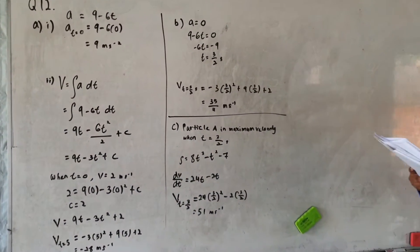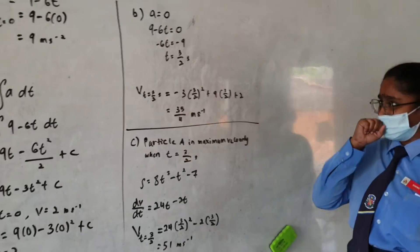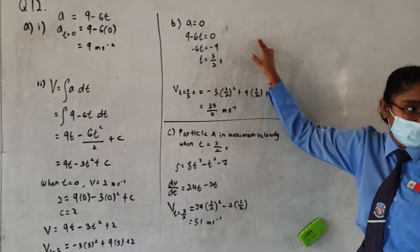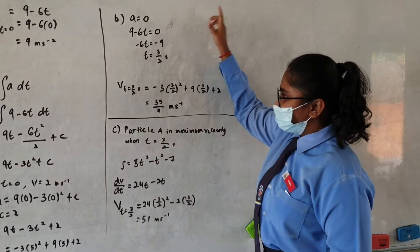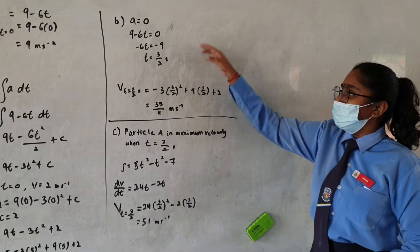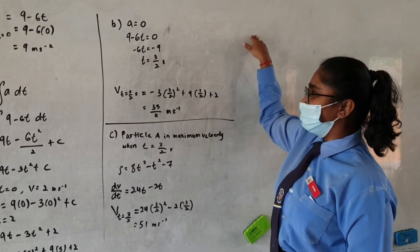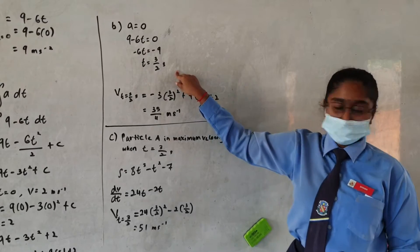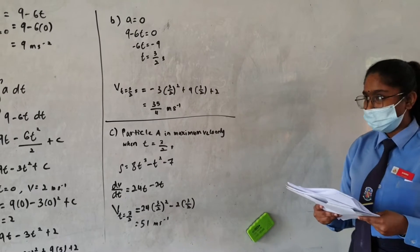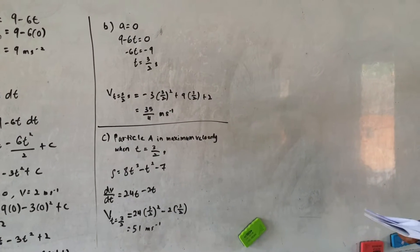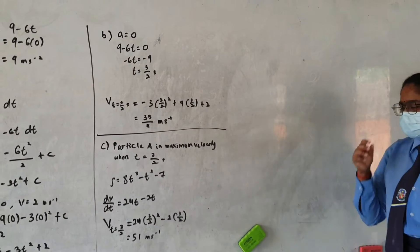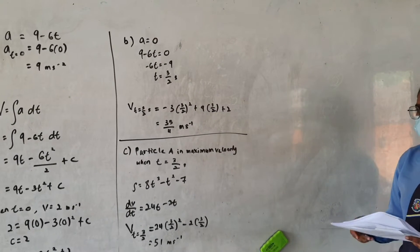The next question is B: find the maximum velocity in meters per second of particle A. If they ask for maximum velocity, then the acceleration will be zero. When you equate acceleration with zero, you get time equals 3 over 2 seconds, which means particle A is at maximum velocity when t equals 3 over 2 seconds. The keyword 'maximum velocity' tells you to set a equals zero to find t, then you can find the velocity value.